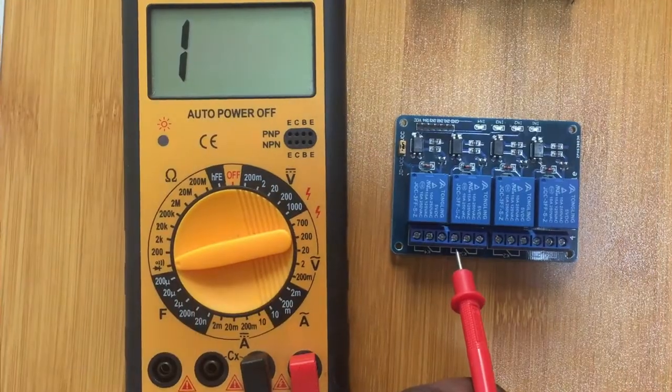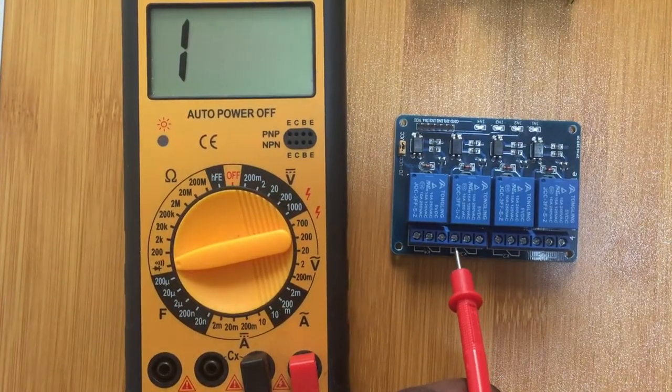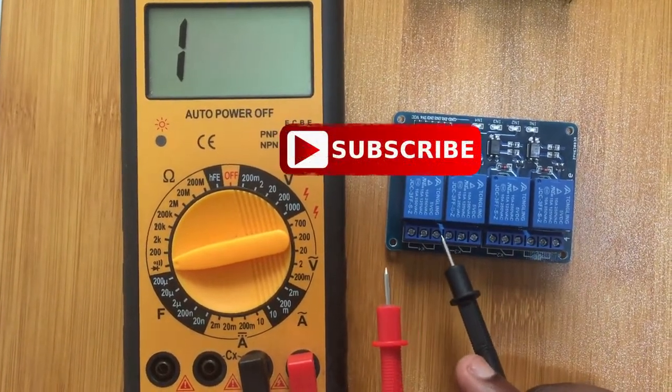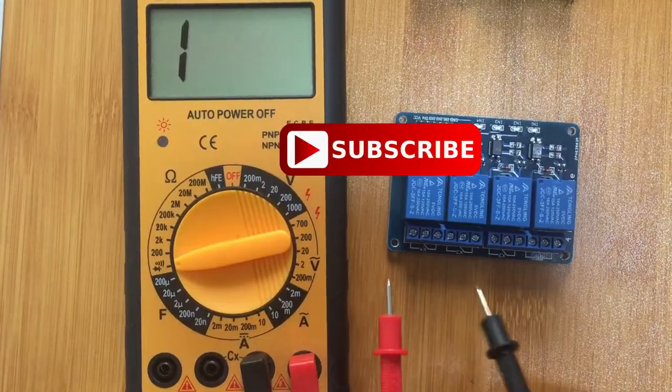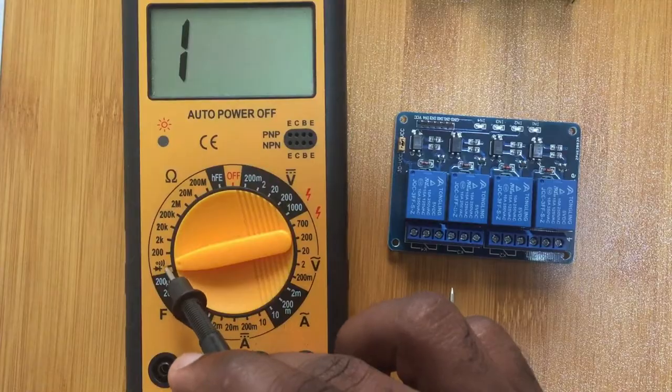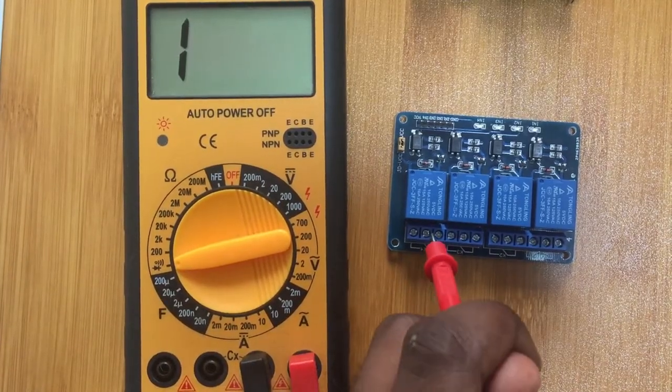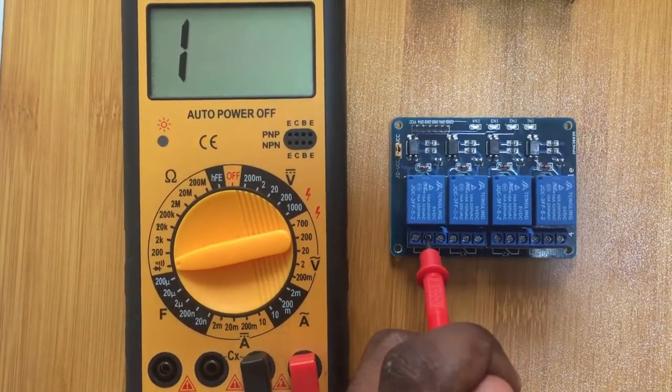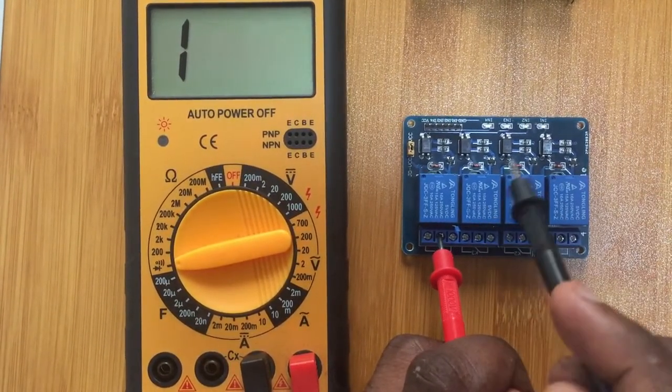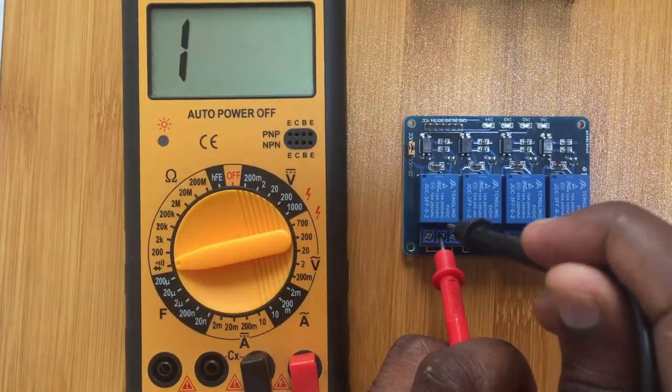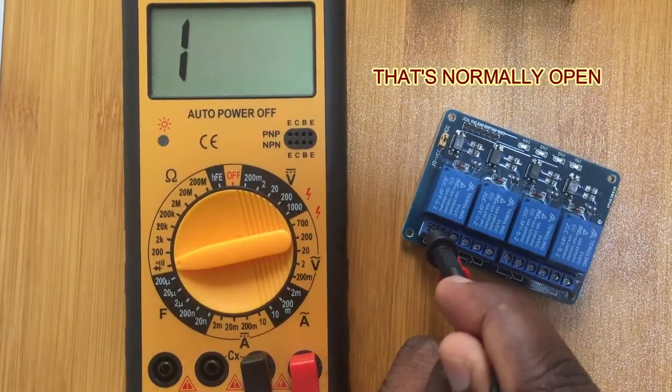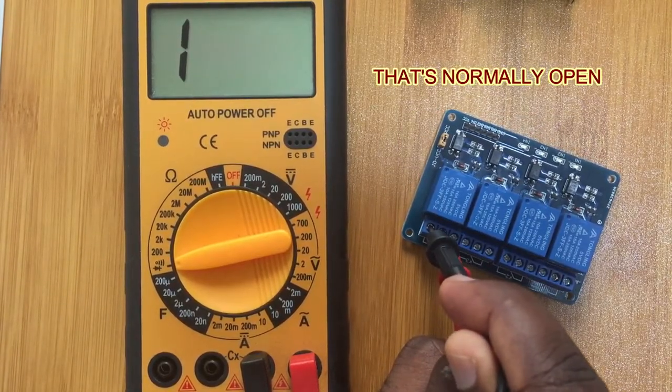We can use the multimeter to determine which of the inputs is normally open and normally closed. So if I set our multimeter here for the continuity mode, then place our positive terminal on the common terminal, then we test for which one is normally open. For example, if you put here, you observe nothing, therefore this is the normally open terminal.